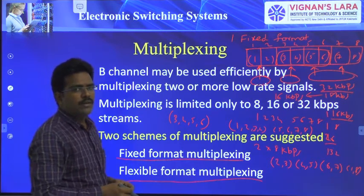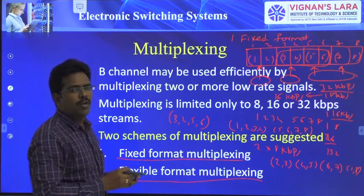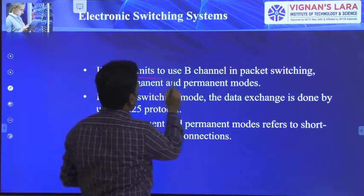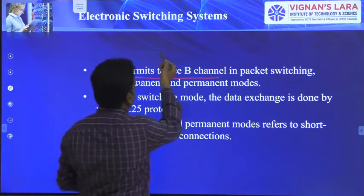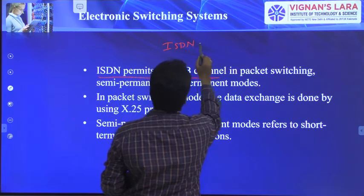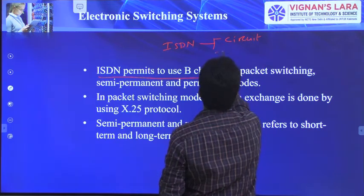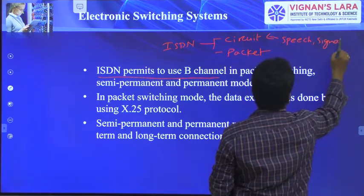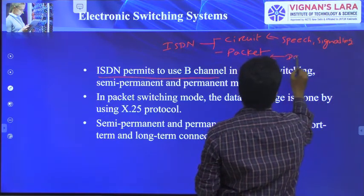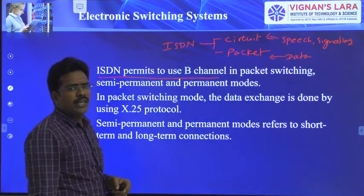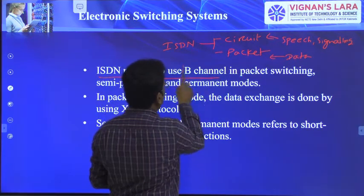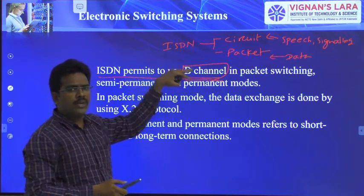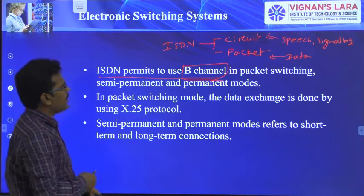Flexible format multiplexing is advantageous because you can multiplex a small number of slower bit rate signals on the 64 kbps B-channel. ISDN also permits the use of the B-channel in packet switching mode. Generally, ISDN can use both circuit switching and packet switching. Circuit switching refers to speech and signaling, while packet switching refers to data. So you can also use the B-channel for data transmission.